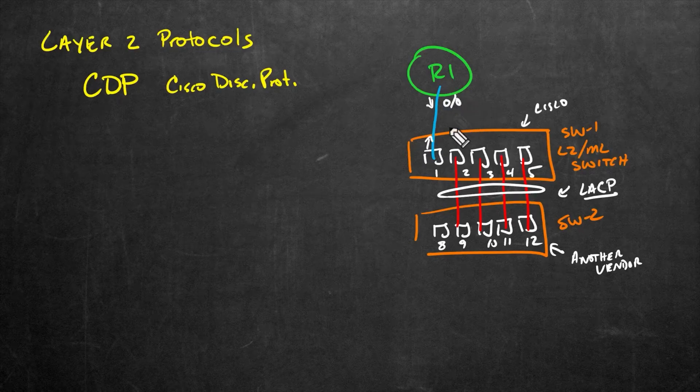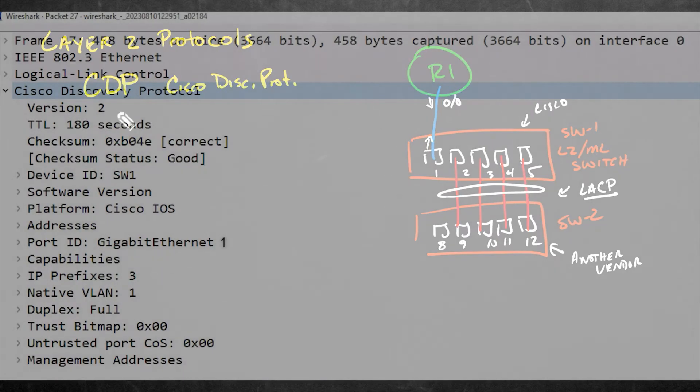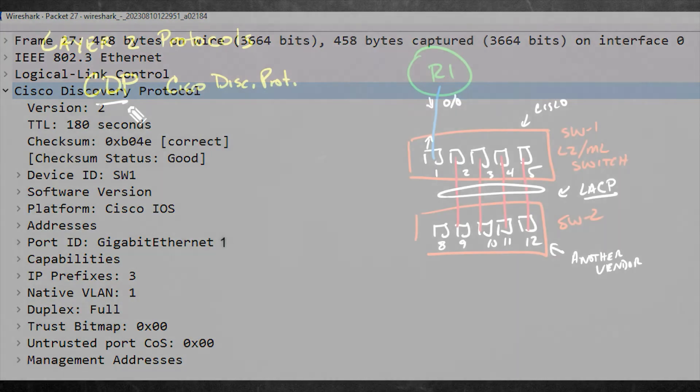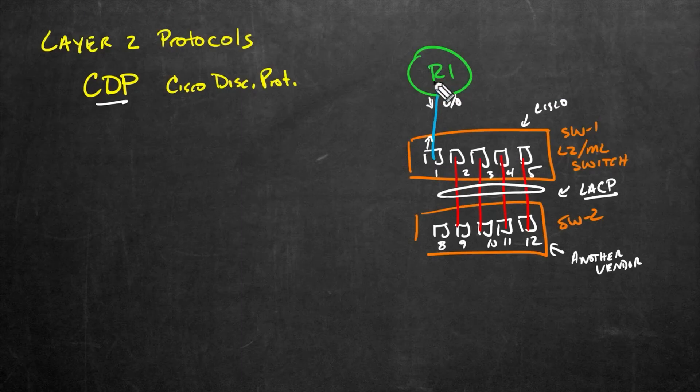So this router can know off of its gig 0/0 interface, for example, that there's a switch. And as part of those CDP advertisements, it could advertise the capabilities of this switch, it could advertise what the management IP address is of the switch, and a whole bunch of other details, all in these little CDP messages that are being sent out, and vice versa, the router is sending CDP messages by default, the switch is learning about them here.